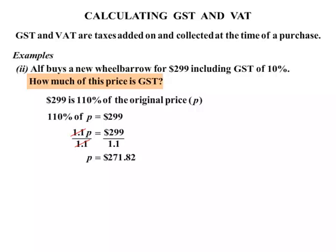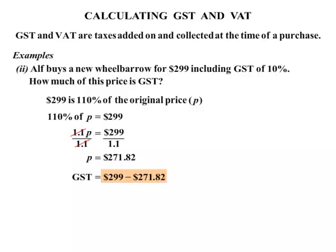The question is how much of this price is GST? The GST component: the original price including GST was $299, but the price without GST is $271.82. So if we subtract that away from the original price, we end up getting the GST component, which is $27.18.